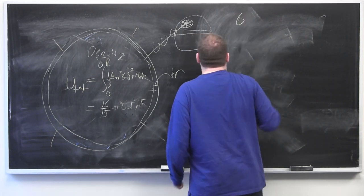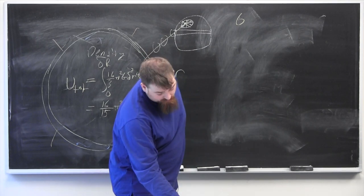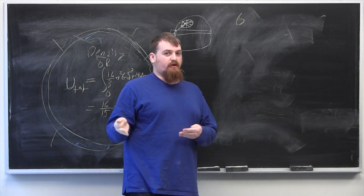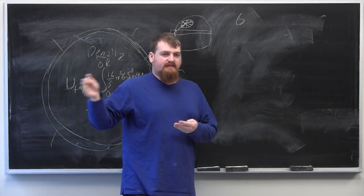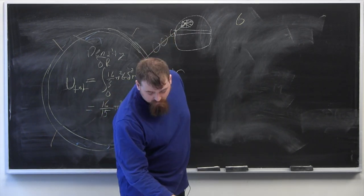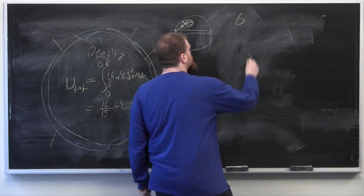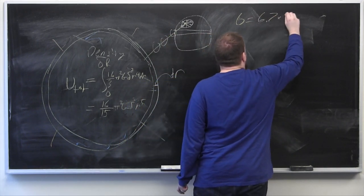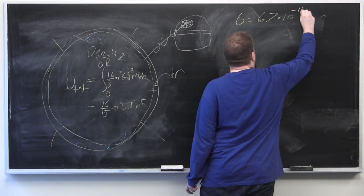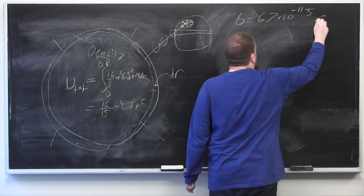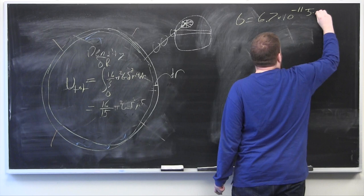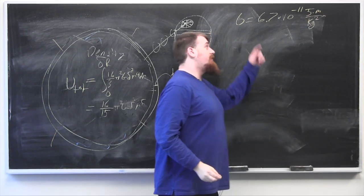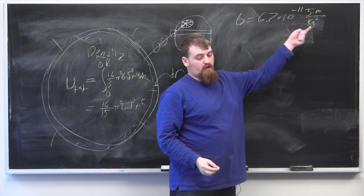So the gravitational constant is constant across the universe. It was as it was in a galaxy a long time ago, far far away, the same then as it is now. And that's equal to 6.7 times 10 to the negative 11 joule meters per kilogram squared. This can possibly be written in other units as well.